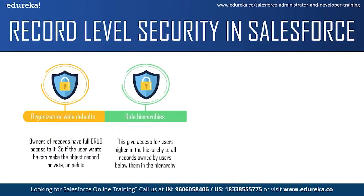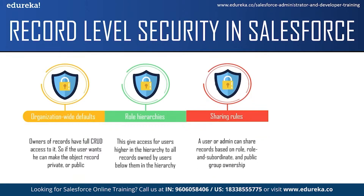The next way is role hierarchy, which gives users higher in the hierarchy access to all records owned by users below them. For example, a sales representative can only view their own records, but managers can view all sales representatives' records. Role hierarchy doesn't have to match your organization chart exactly — each role should represent a level of data access needed. To share records with fellow employees, sharing rules allow a user or admin to share records based on roles, subordinates, and public group ownership.